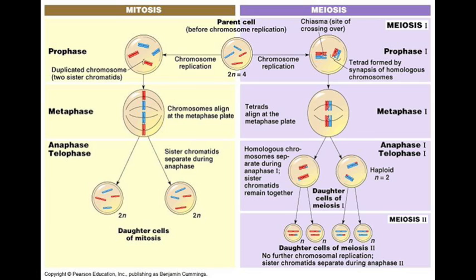Also in mitosis, the genetic identity of the cells is identical to those of the original cell, whereas in meiosis, the daughter cells have a new assortment of DNA in each cell due to the crossing over that produces genetic diversity.